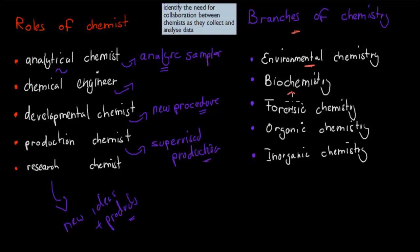We have biochemistry — chemists who deal with living things and how biology and chemistry make everything happen. Biochemistry is a very interesting area. We also have forensic chemistry. These are the ones who would deal with crime and figure out, using chemistry, whether someone committed a murder or some other crime.